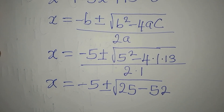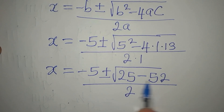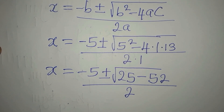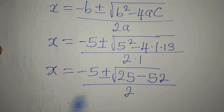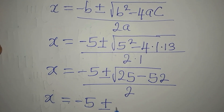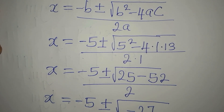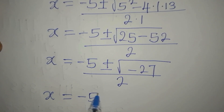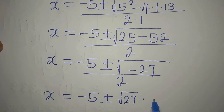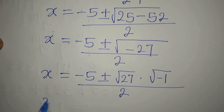So x = (-5 ± √(25 - 52)) / 2 = (-5 ± √(-27)) / 2. Do not take the square root of 25 first — you must subtract before finding the square root. We factor out the negative: x = (-5 ± √27 · √(-1)) / 2.